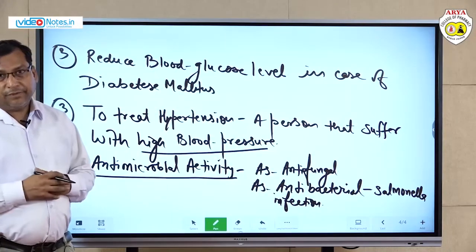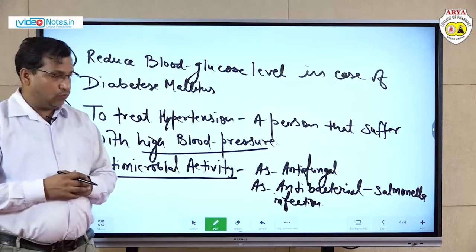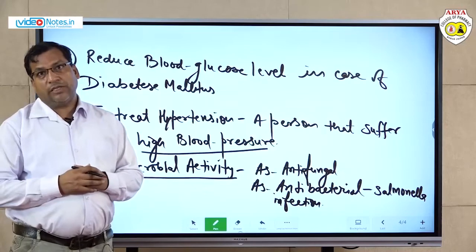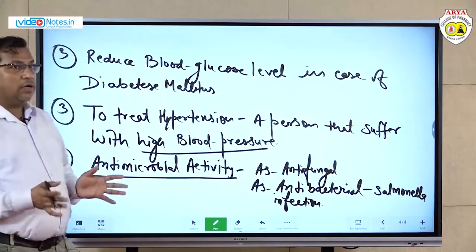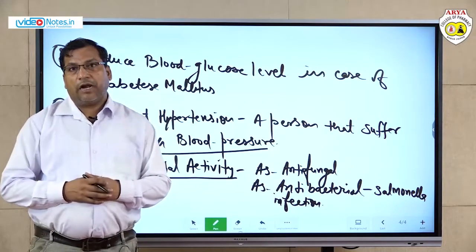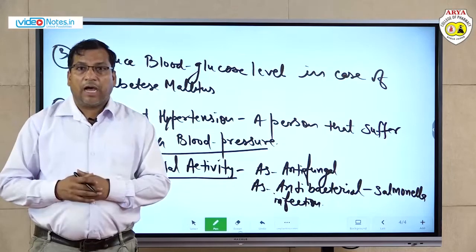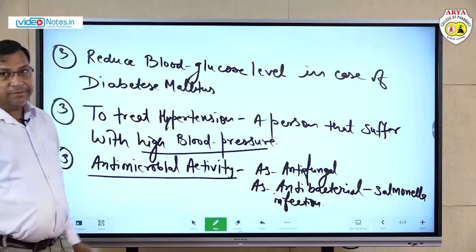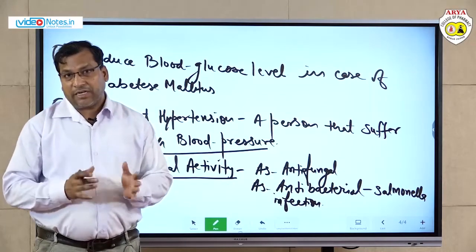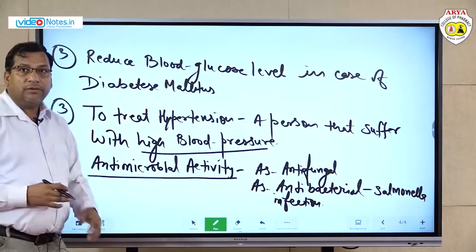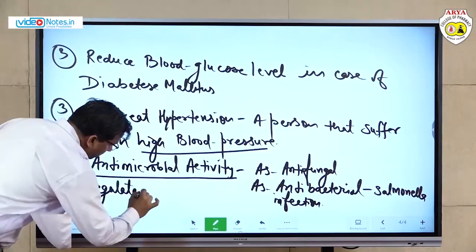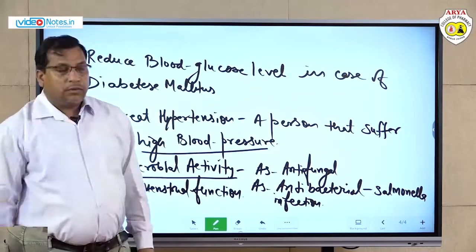Coriander extract is also very useful to maintain or regulate the menstrual cycle. In Ayurveda, preparations containing coriander extract are prescribed to regulate menstrual function.